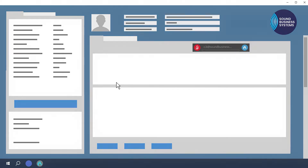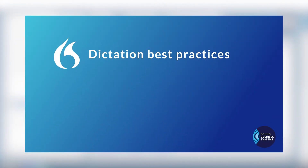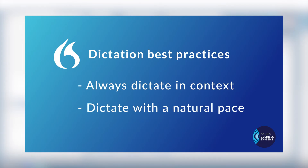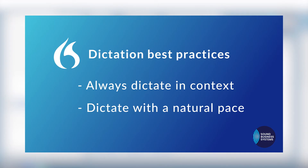Before you start dictating, there are a few things you should be aware of. Dragon delivers the best results when you come up with the whole phrase, the whole paragraph, or the whole sentence, and then say it all at once. Dragon looks at the context — it knows what words make sense next to other words in a sentence. It is best to dictate with a natural pace and try to avoid unnatural pauses. So try to talk clearly and at a normal pace.